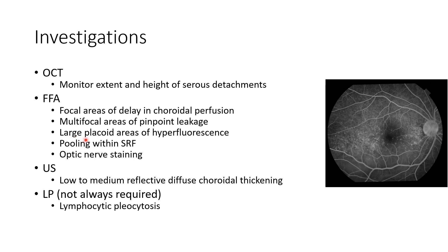There can be large placoid areas of hyperfluorescence, pooling within subretinal fluid, and optic nerve staining. Ultrasonography when done will show low to medium reflective diffuse choroidal thickening. Lumbar puncture is not always required, however when it is done it will show lymphocytic pleocytosis.